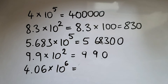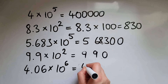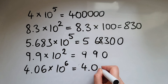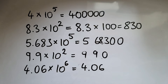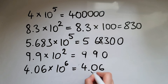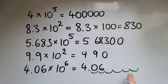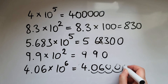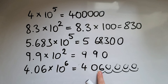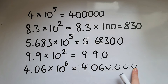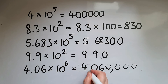4.06 times 10 to the power of 6: let's rewrite the initial number. We move the decimal point 6 places to the right: 1, 2, 3, 4, 5, 6. Fill the remaining spaces with zeros and move the decimal point. The answer is four million and sixty thousand.